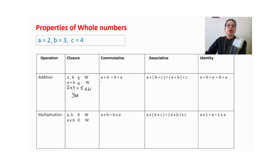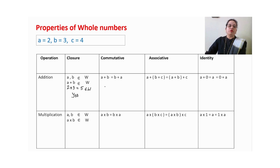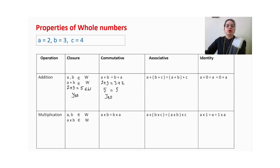Now commutative property: if a and b are two numbers and we change the order but the answer is the same, this is commutative property. Value of a is 2, so 2 plus 3 — just change the order: 3 plus 2. This gives 5 and also 5. Both sides are equal, so yes, we can observe commutative property in addition of whole numbers.